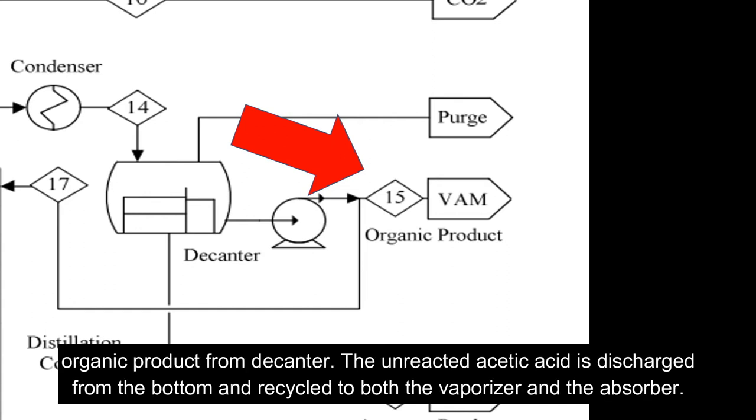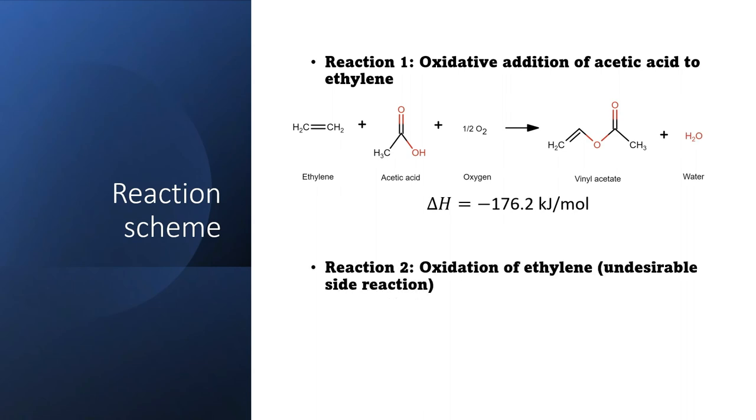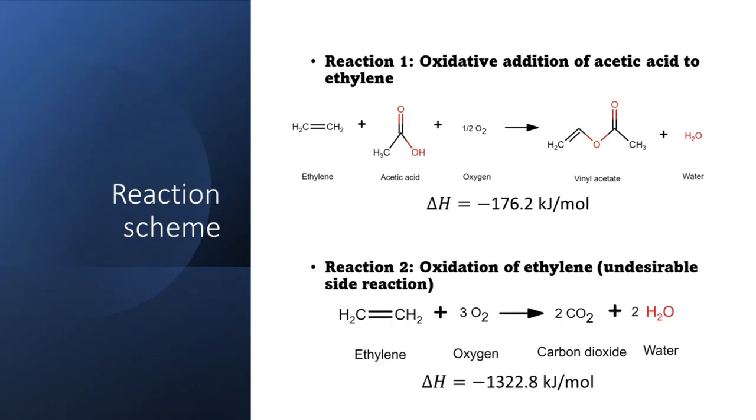Finally, vinyl acetate monomer product is discharged as organic product from the decanter. The unreacted acetic acid is discharged from the bottom and recycled to both the vaporizer and the absorber. There are two reaction schemes for this production: oxidative addition of acetic acid to ethylene and oxidation of ethylene.